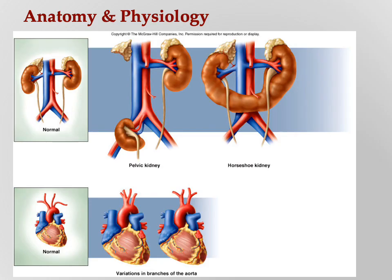We will cover normal anatomy in this class, but there are lots of variations. At the top you see the normal arrangement of kidneys on the left — two kidneys, located in the back. On the right, the pelvic kidney — someone's kidney is located way down in their pelvic region. And at the top right, a horseshoe kidney — one giant kidney instead of two. These aren't common, but they're well-known variations.